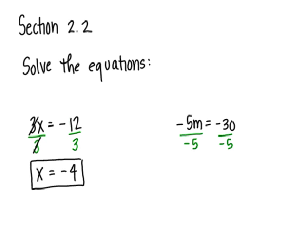I know that negative 5 divided by negative 5 would leave me with positive 1m. Negative 30 divided by negative 5, they have the same sign which tells me I'll have a positive result and that would be positive 6.